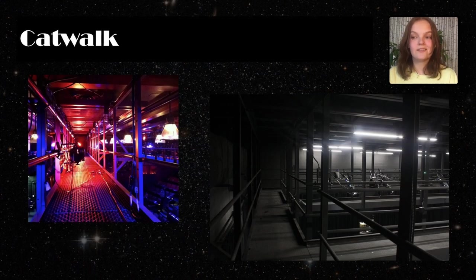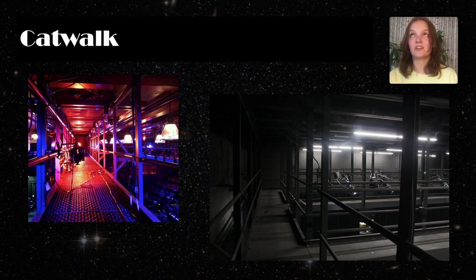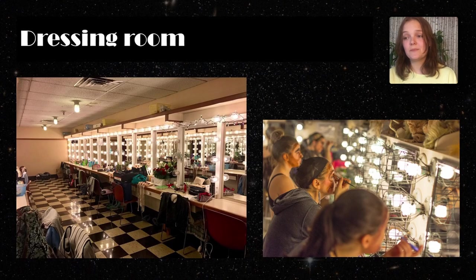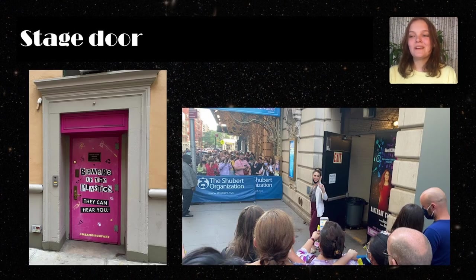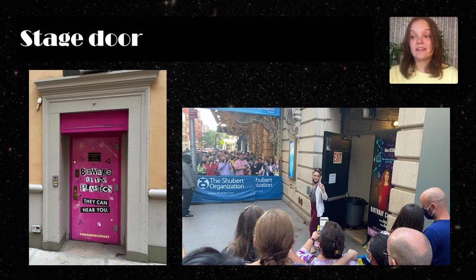A catwalk is an overhead platform that technical workers use to manage lighting and sound systems positioned high up in the theater. The dressing room is a backstage area where the actors change their costumes and apply makeup. The green room is a backstage area where the performers and understudies wait during their time offstage or rest before performing. The stage door is the backstage entrance for theater employees, and audience members might have the opportunity to meet and thank their favorite actors at the stage door as they exit the theater, maybe even having their playbill signed.